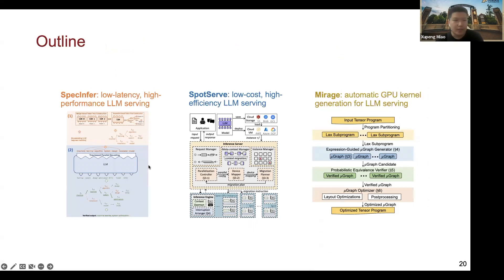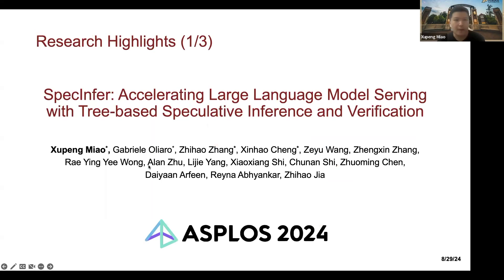Now, in today's talk we will introduce three parts — three representative projects from our group. The first is called SpecInfer, which is about speculative decoding in LLM serving systems. The second is SpotServe, which tells you how to reduce monetary cost on LLM serving by using spot instances on the cloud. The third is Mirage, an automatic GPU kernel generation compiler for LLM serving. Let's start with SpecInfer, which has been accepted at this year's ASPLOS conference.